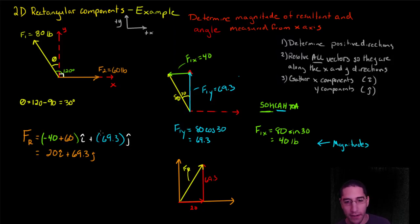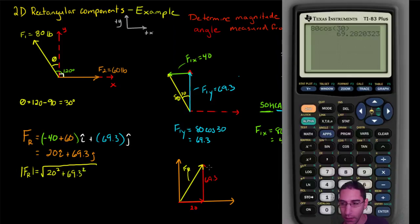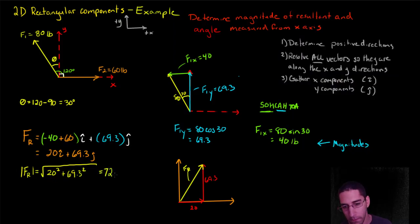If I wanted to get the magnitude, I would say the magnitude of my resultant force is equal to, remember it's the square root of 20 squared plus 69.3 squared. It's going to be 72.1 pounds. And then, I can figure out what this angle is. And this is why it's always good to graph it.